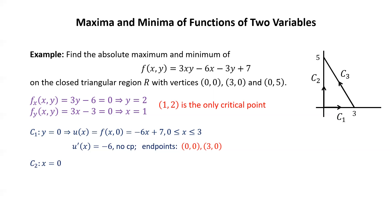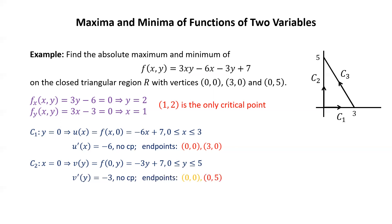Next, C2 lies along the vertical line x = 0. Replacing x by 0 gives v(y) = f(0,y) = −3y + 7, with y ranging from 0 to 5. The derivative is −3, which is never zero, so no critical points on C2. The endpoints are (0,0) and (0,5); since we already listed (0,0), the new point is (0,5). So far our potential candidates are: (1,2), (0,0), (3,0), and (0,5).